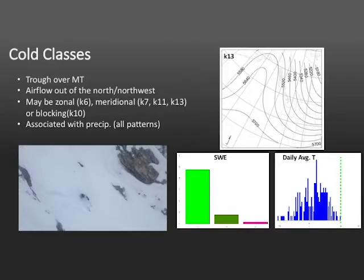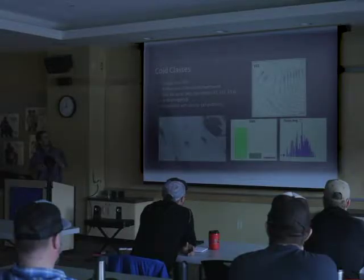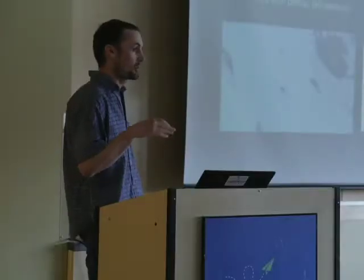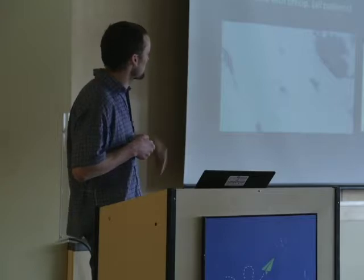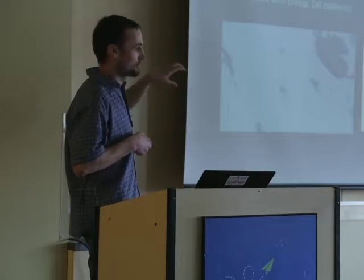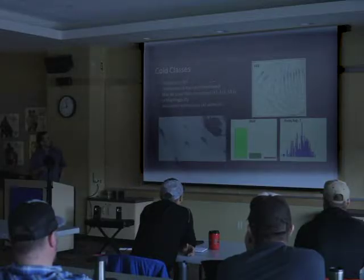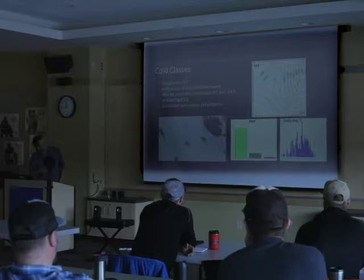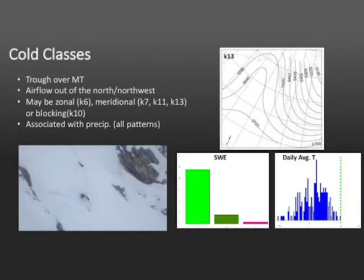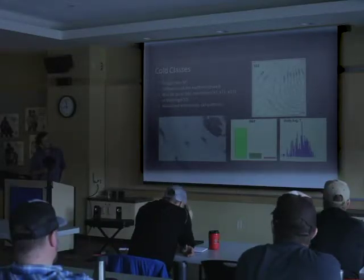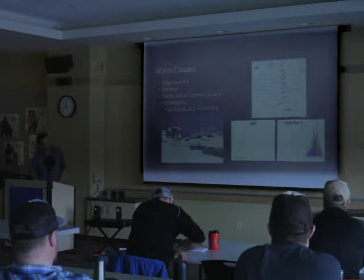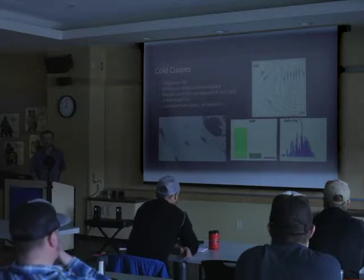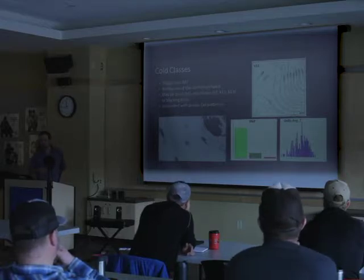Compare that with the cold classes — we see a lot of the same patterns we see with the storm classes, where we'll have a well-defined trough over Montana, air moving out of the north. Sometimes we can see more zonal flow, meaning stronger east-to-west patterns. But even with those zonal patterns, they're typically coming from northwest to southeast, whereas in the warm classes they'd be coming either due west or from the south. We see a lot of meridional flow — rather than most of the air moving east-west, it's moving north-south — and they're usually associated with precipitation. This is K13, and you'll notice much more cold days and a lot higher frequency of precipitation events. That's when we're going to see better skiing.